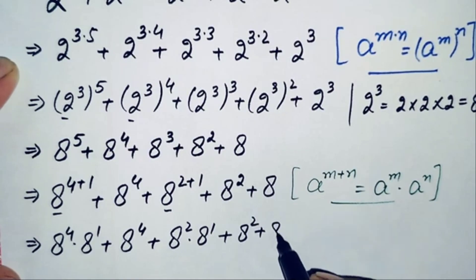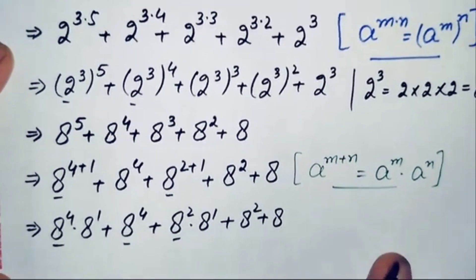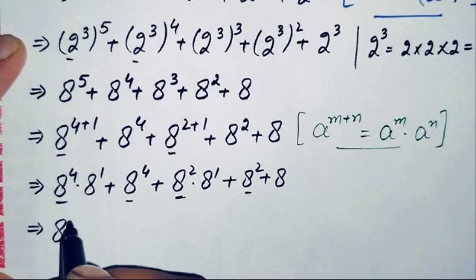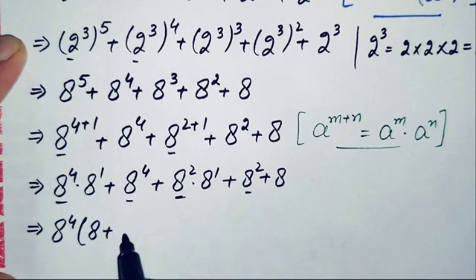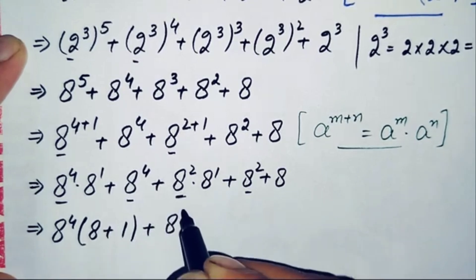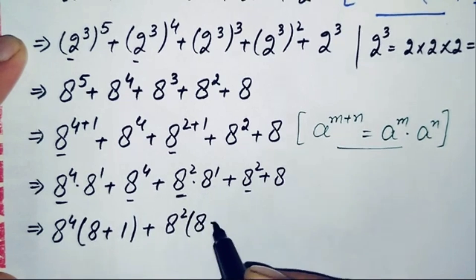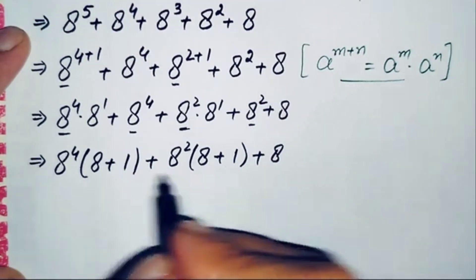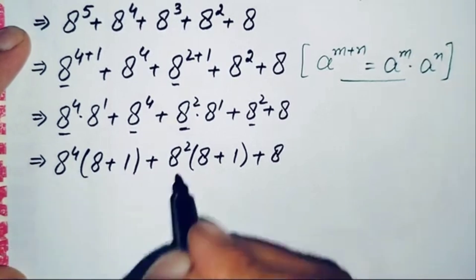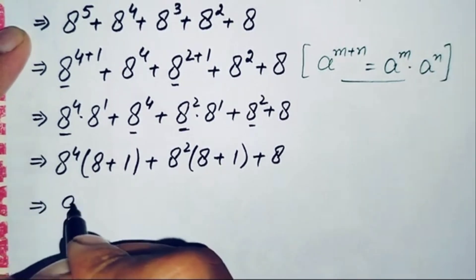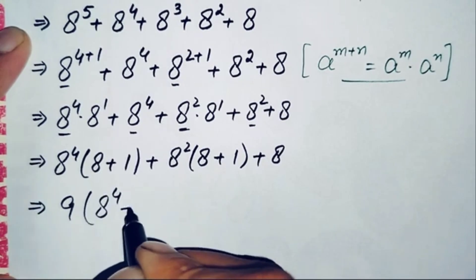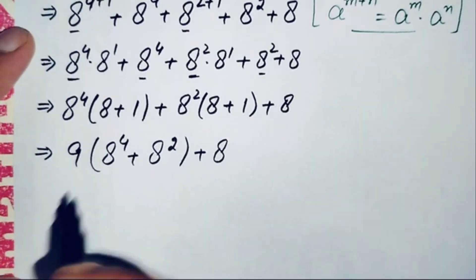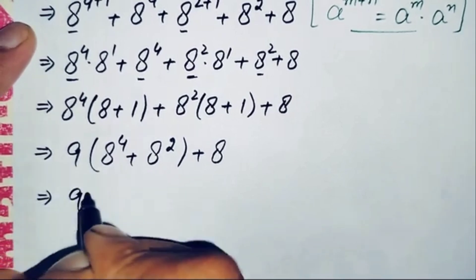Here, 8 raised to power 4 is common in the first two terms, and 8 raised to power 2 is common in the next two terms. Taking out 8 raised to power 4 common from the first two terms gives (8 plus 1), and taking 8 raised to power 2 common from the next two terms gives (8 plus 1), which is 9. So we take 9 as common from these two groups, giving: 9 times (8 raised to power 4 plus 8 raised to power 2), plus 8.